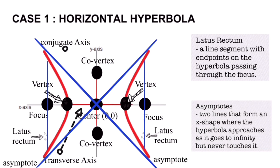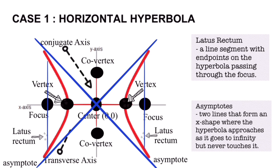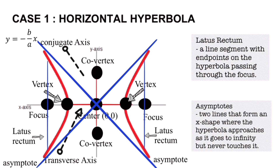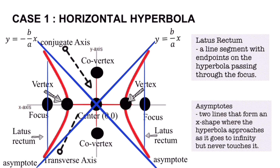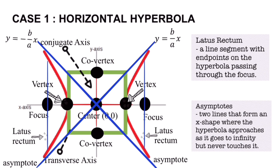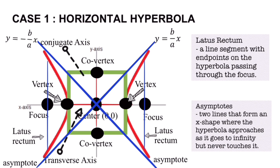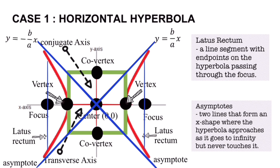The next parts are the asymptotes — these are the two lines that form an X shape where the hyperbola approaches but never touches. The equation of the asymptote with a negative slope is y = −(b/a)x, while the other asymptote with a positive slope is y = (b/a)x. The easiest way to draw the asymptotes is by drawing a rectangle covering the four points — the two vertices and the two co-vertices — and the two asymptotes are the diagonals of this rectangle extending outward.